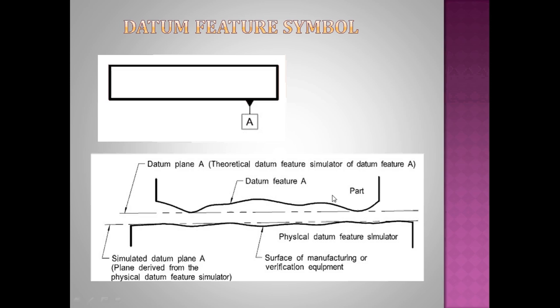The actual part which is manufactured will always have variations, the machining variations. This is known as the datum feature, whereas theoretically exact what is mentioned in the drawing, that is known as datum plane A. And how do we simulate this datum plane? Using the measuring instruments we are going to simulate this.